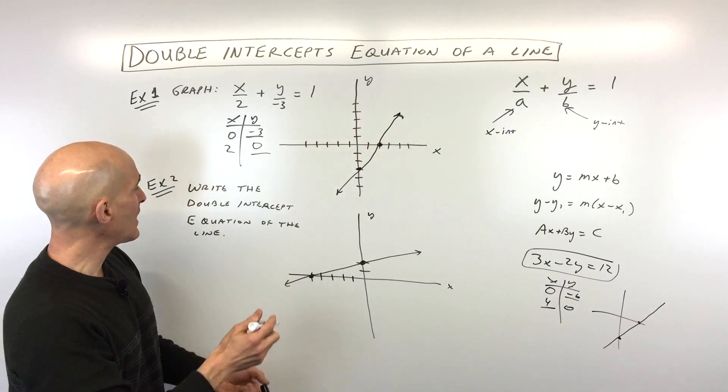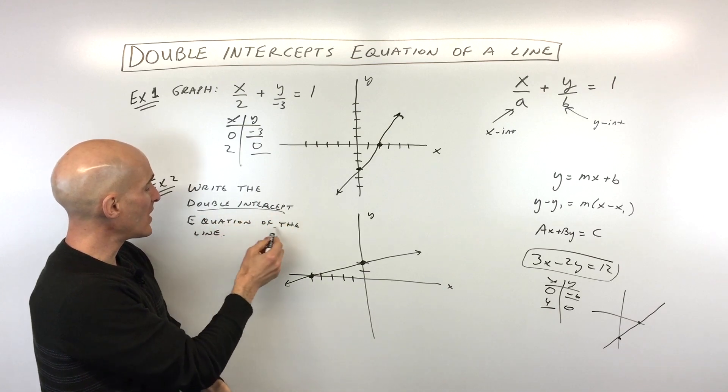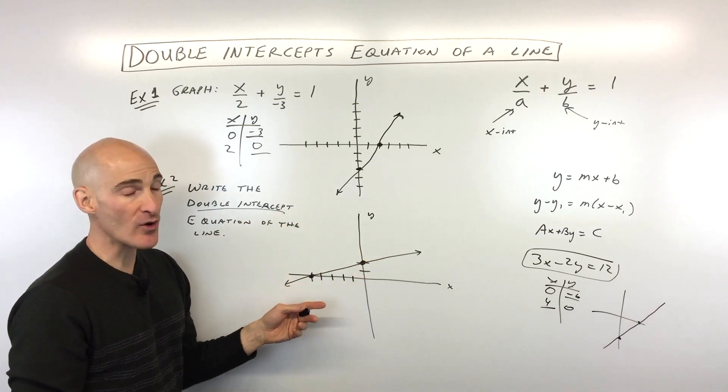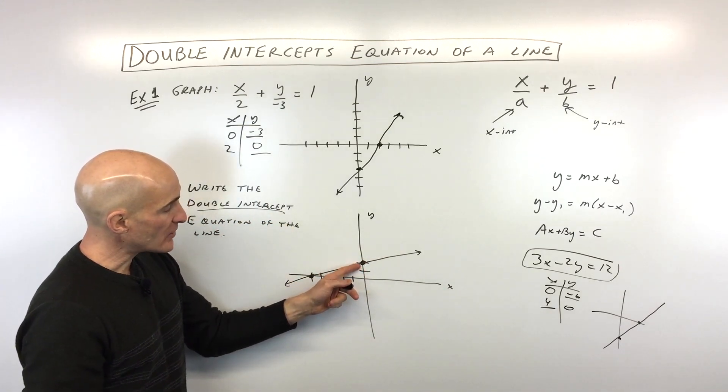Okay, so number 2, now we're working backwards. We're saying write the double-intercept equation of the line. Okay, they're giving us the graph.